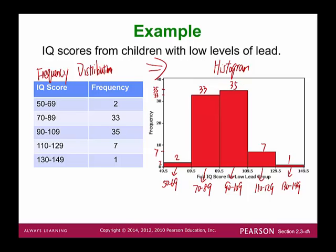Using the class boundary to separate classes will make the histogram look slightly better and less messy. So we easily convert the frequency distribution table to the histogram.